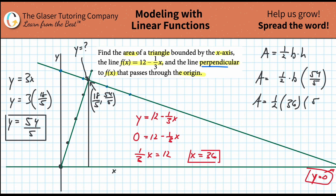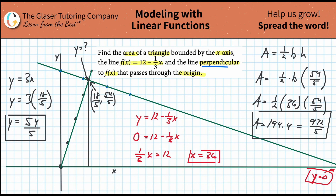Now I can compute the area. Area equals one-half times base times height equals one-half times 36 times 54 over 5. That gives 36 times 54 divided by 10, which is 1944 divided by 10, or 972 over 5, which equals 194.4. So the area of the triangle is 972 over 5, or 194.4 square units. Nice problem!